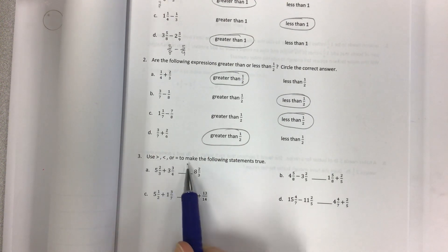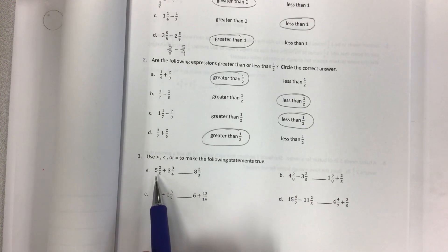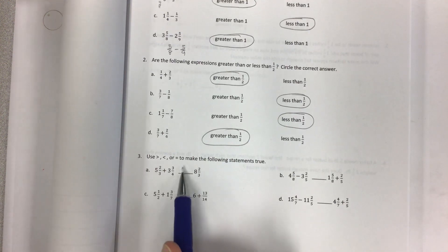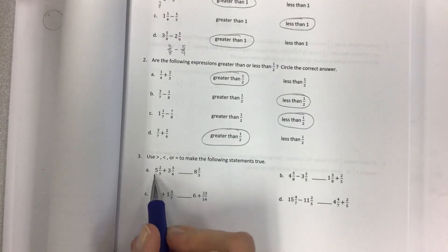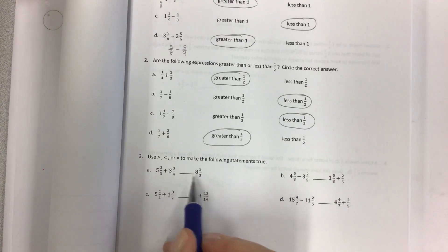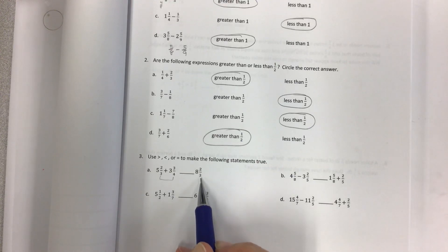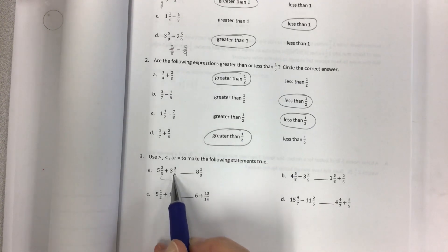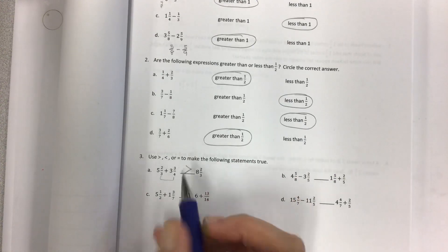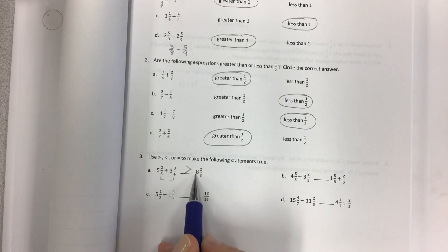Use greater than, less than, or equal to to make the following statements true. Five and two thirds plus three and three fourths compared to eight and two thirds. So I know that five plus three is eight, so that's not the problem. It's how I would add the two thirds and the three fourths and compare that with two thirds. So two thirds here and two thirds here would be equal, but now I also have to add this. So it means that this side is greater than this side.